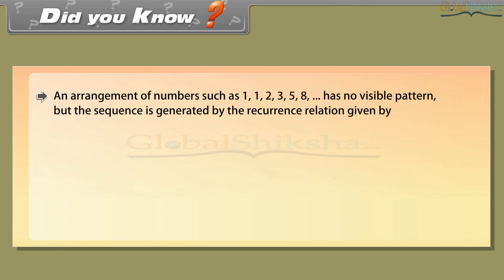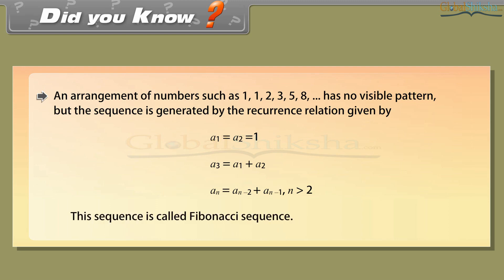Did you know? An arrangement of numbers such as 1, 1, 2, 3, 5, 8, and so on has no visible pattern, but this sequence is generated by the recurrence relation: A1 = A2 = 1; A3 = A1 + A2; An = A(n−2) + A(n−1) for n > 2. This sequence is called the Fibonacci sequence.